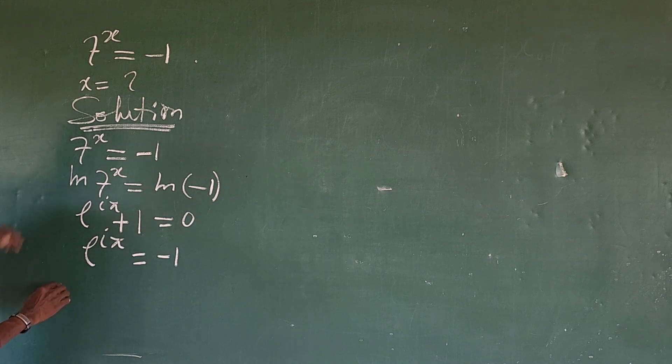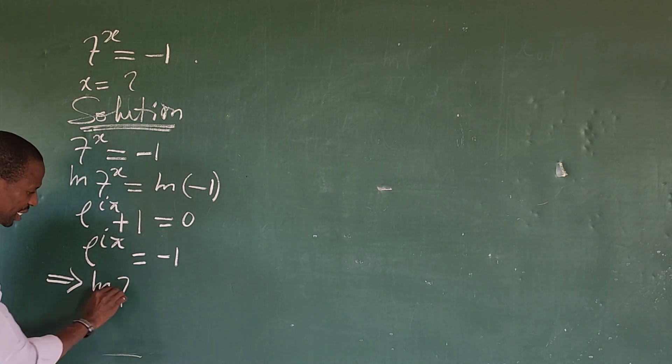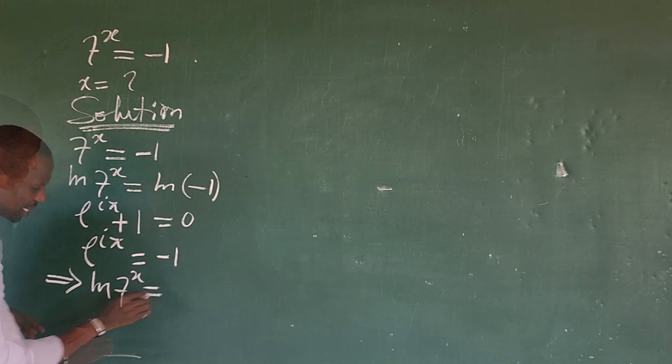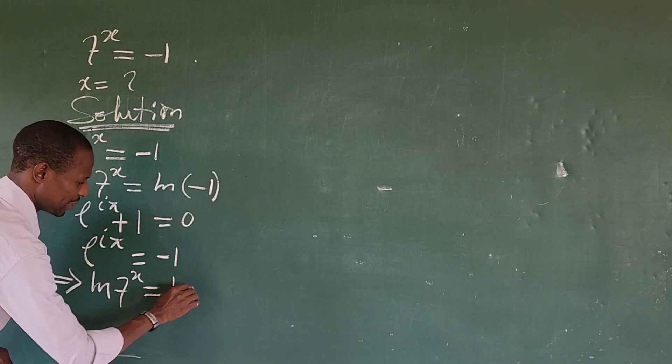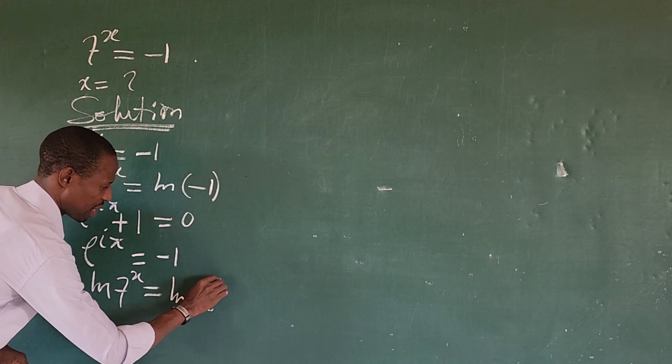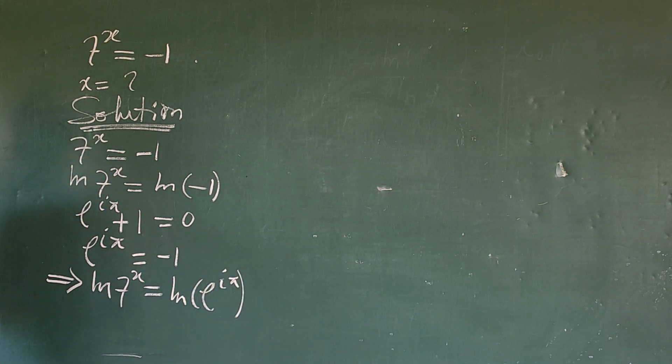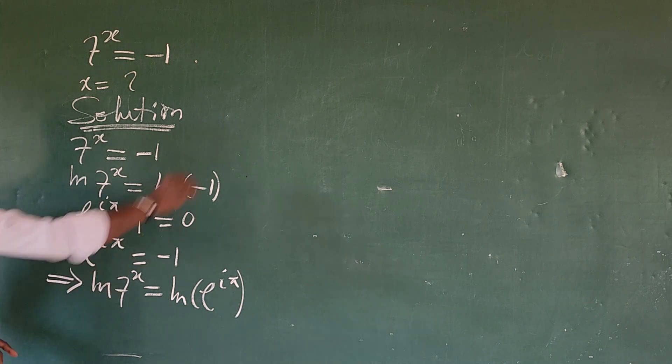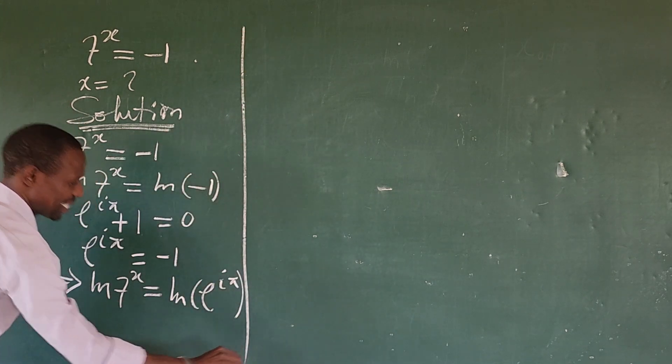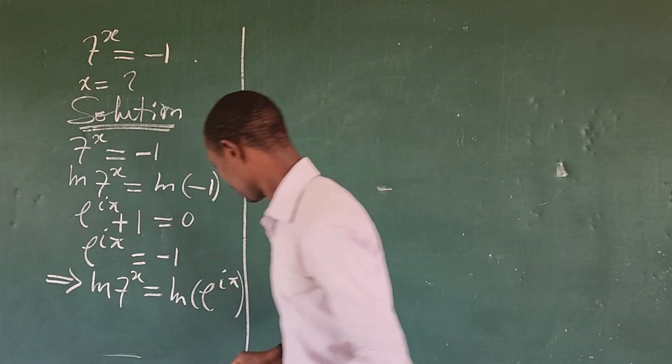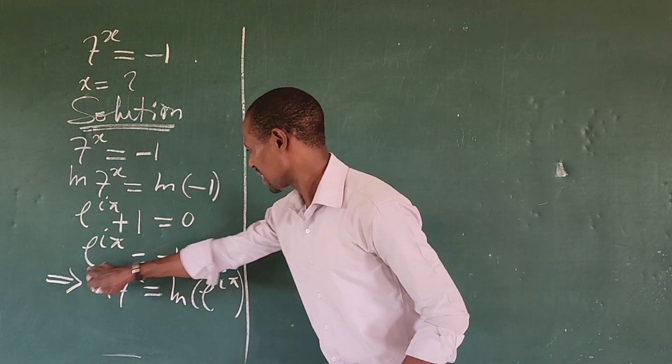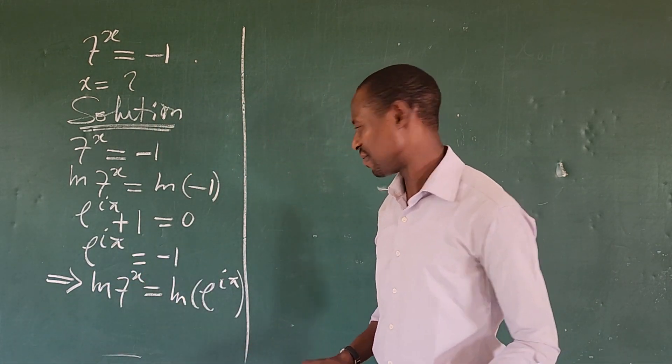Alright, so from here, our equation implies that our ln of 7 to the power of x is equal to ln of E to the power of iota pi. Easy. So let's continue. This side, I'll see what this gives us in turn. So what we do, move this guy to this side according to the log rule.